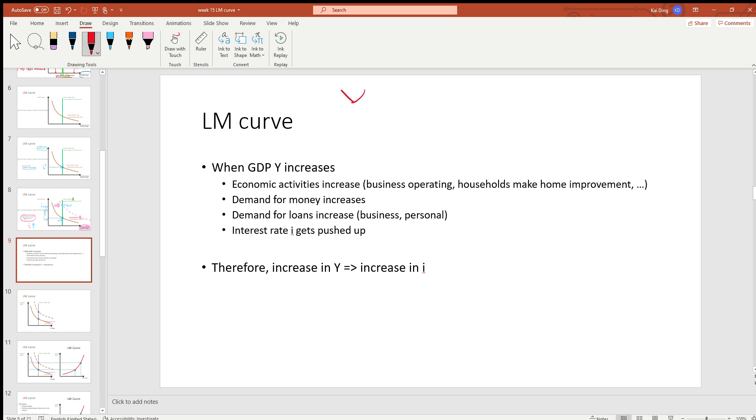Basically, an increase in GDP Y translates to an increase in the interest rate I. The reason for this is pretty intuitive. When GDP Y increases, it means there is a lot of production and economic activity going on in the economy.